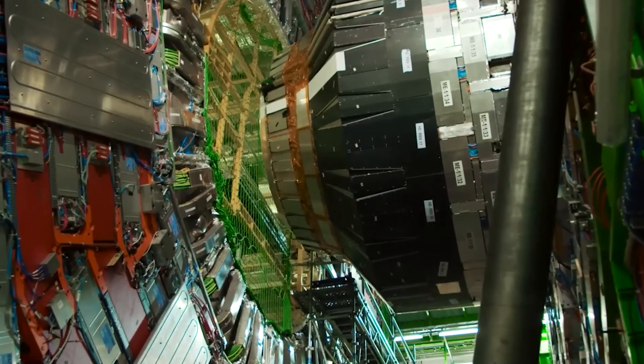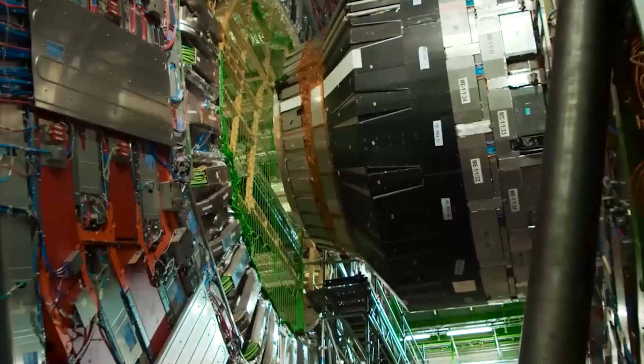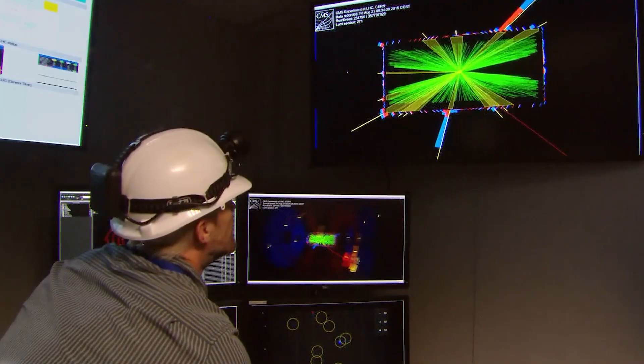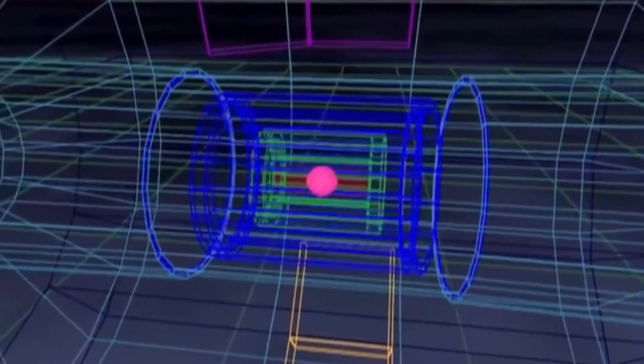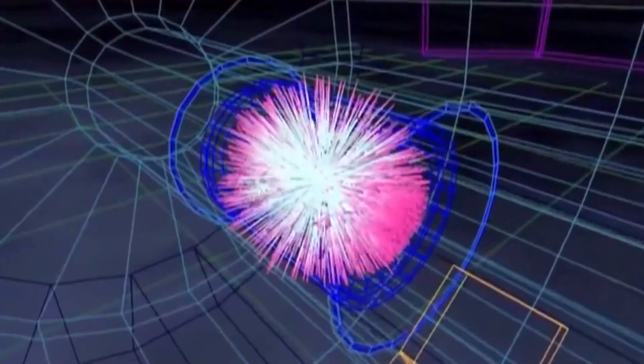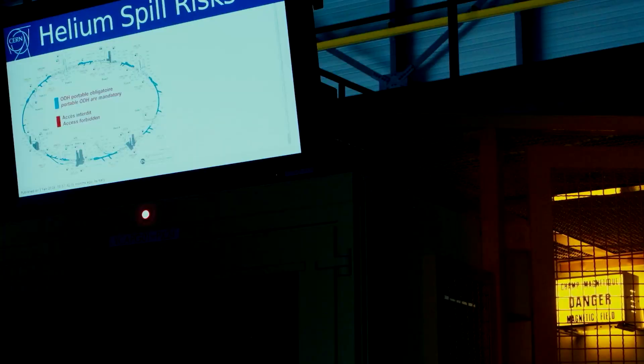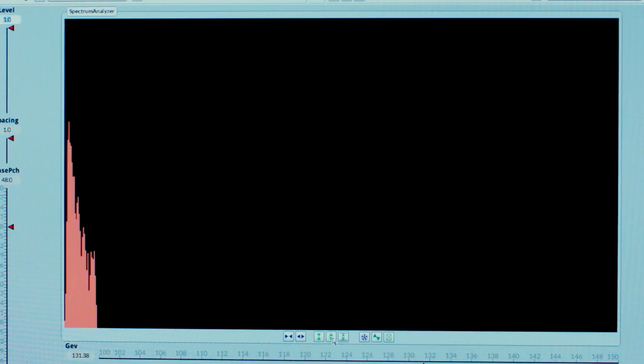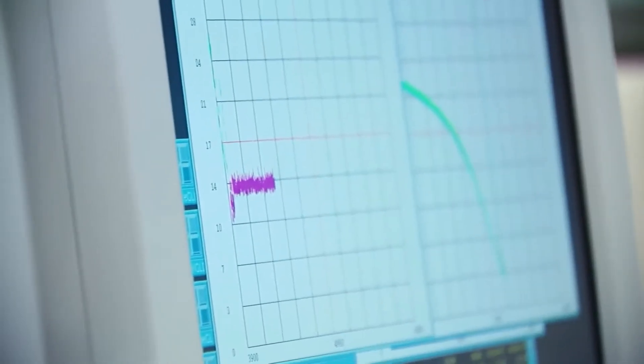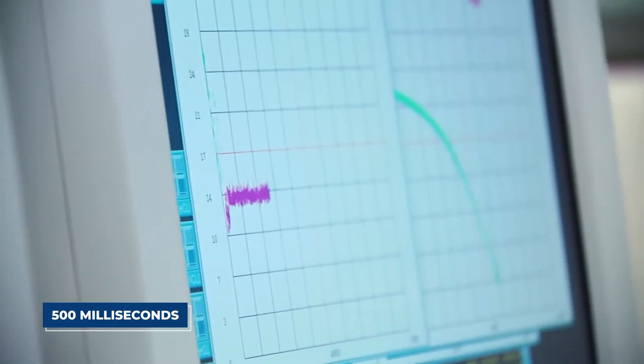Then came the first undeniable signal, not a particle collision, not a quantum fluctuation easily explained by standard models. This was different. CHIRP detected an energy signature that was both alien and incredibly precise, a perfect waveform of unknown origin. It pulsed, appearing for just 500 milliseconds, then vanished.